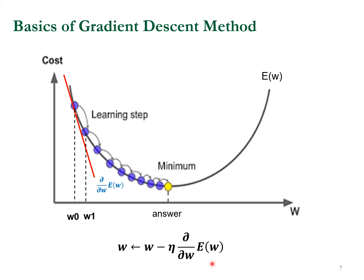If you start on the right side where the slope is positive, you compute the slope, which is positive. With the minus sign in the formula, the result is negative — meaning you decrease the current W value. You start here and decrease it, repeating this until eventually it gradually merges to the minimum point. If this graph is convex, you are guaranteed to reach the optimal W.